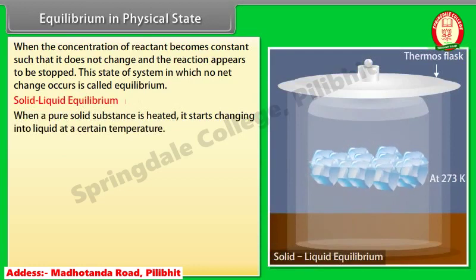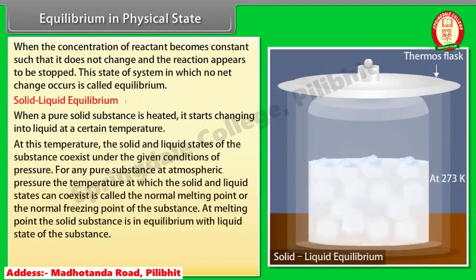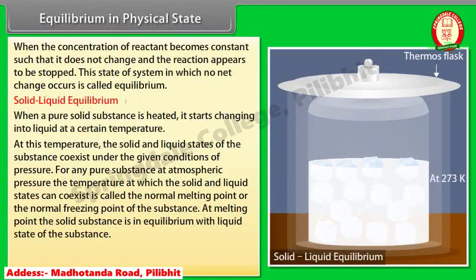Solid-Liquid Equilibrium. When a pure solid substance is heated, it starts changing into liquid at a certain temperature. At this temperature, the solid and liquid states of the substance coexist under the given conditions of pressure. For any pure substance at atmospheric pressure, the temperature at which the solid and liquid states can coexist is called the normal melting point or the normal freezing point of the substance. At melting point, the solid substance is in equilibrium with the liquid state of the substance.